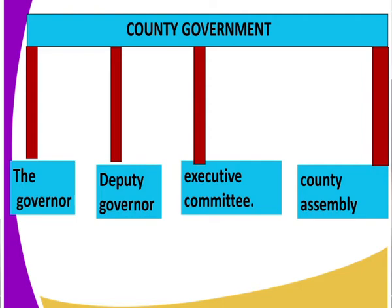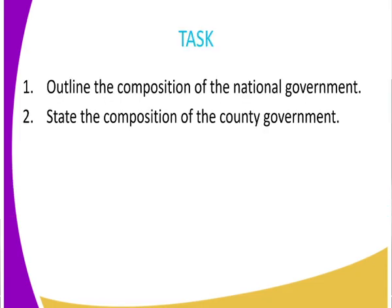Class, we have looked at the formation of government. We have two governments: the county government and the national government. The national government comprises the executive, the legislature, and the judiciary, led by the chief justice. The county government comprises the governor, the deputy governor, the executive committee, and the county assembly — whose members are elected from the ward level to represent electorates in the county. For assignment, outline the composition of both the national government and the county government.